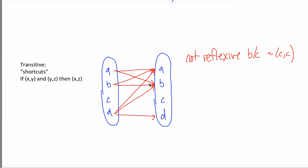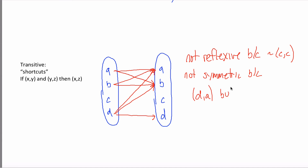What about symmetric? There's an arrow from A to B and one back from B to A — that's a good sign. But that's not enough. Every single arrow needs its partner arrow. A to A's partner is A to A — fine. A to B's partner is B to A — fine. B to B's partner is B to B — fine. But D to A needs a partner arrow from A to D, and it doesn't have it. So it's not symmetric. One example: there's an arrow from D to A but not from A to D. You could also say there's an arrow from D to B but not from B to D.